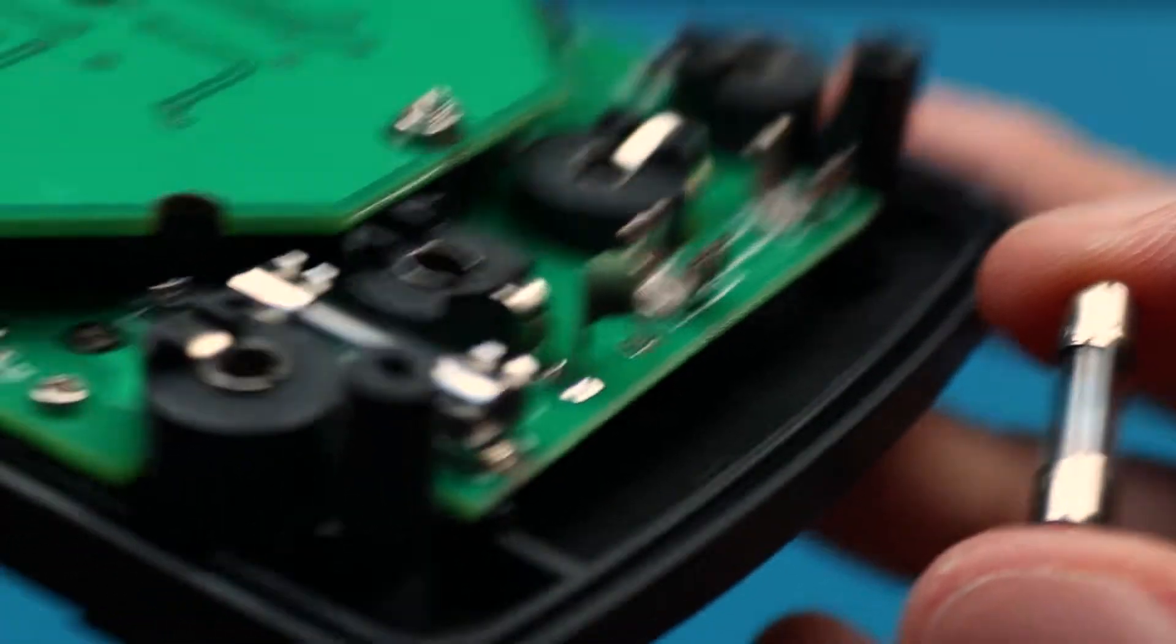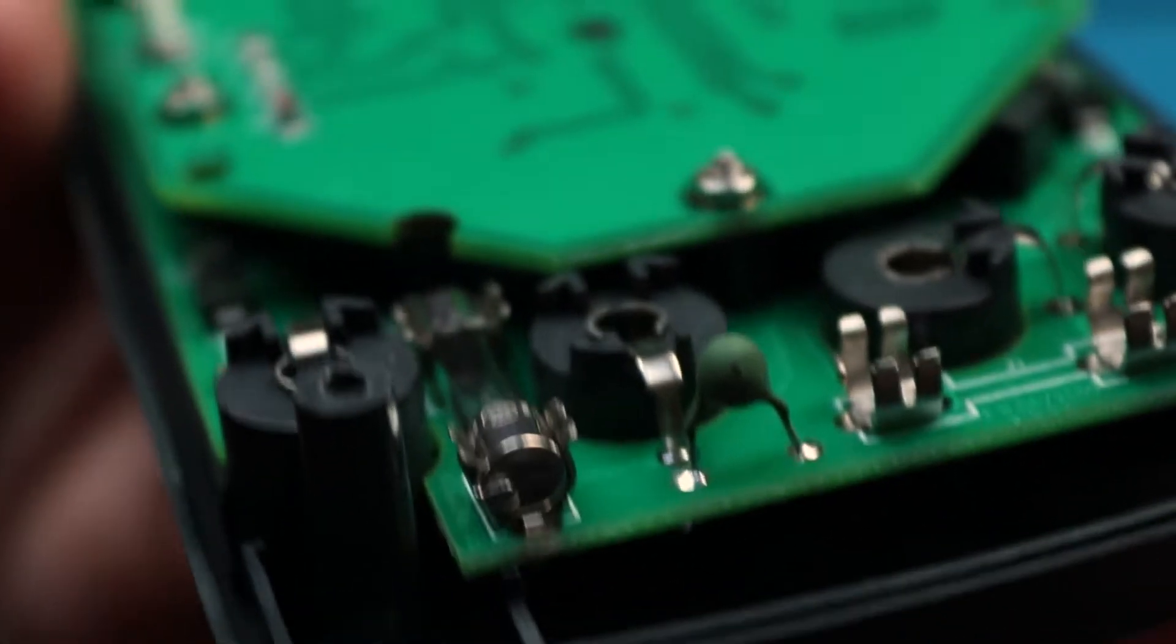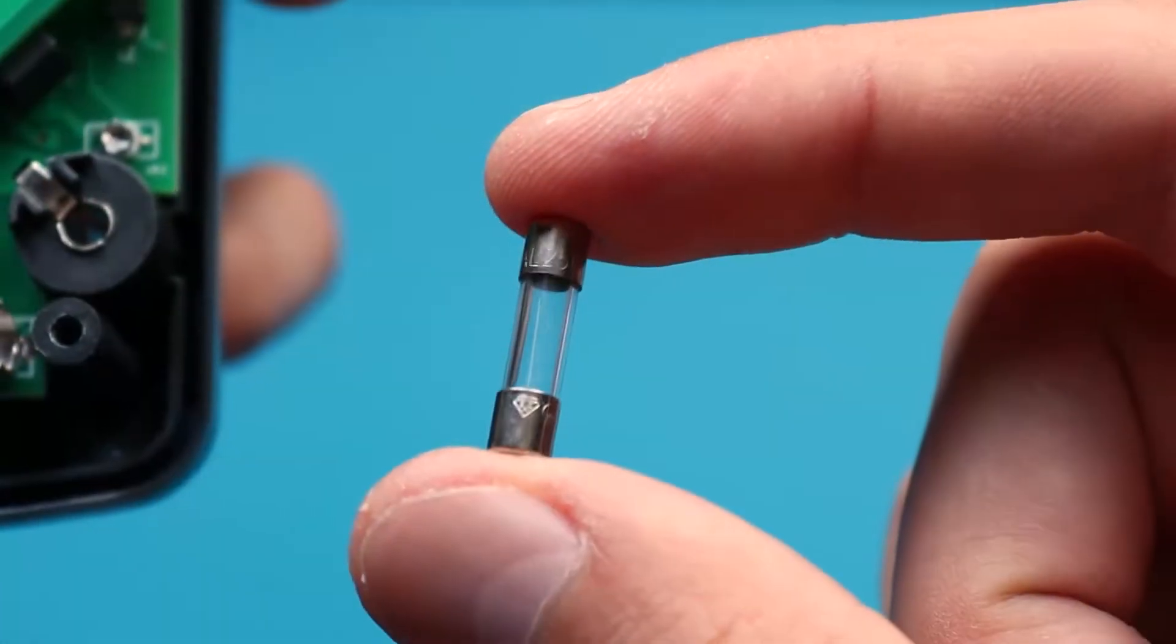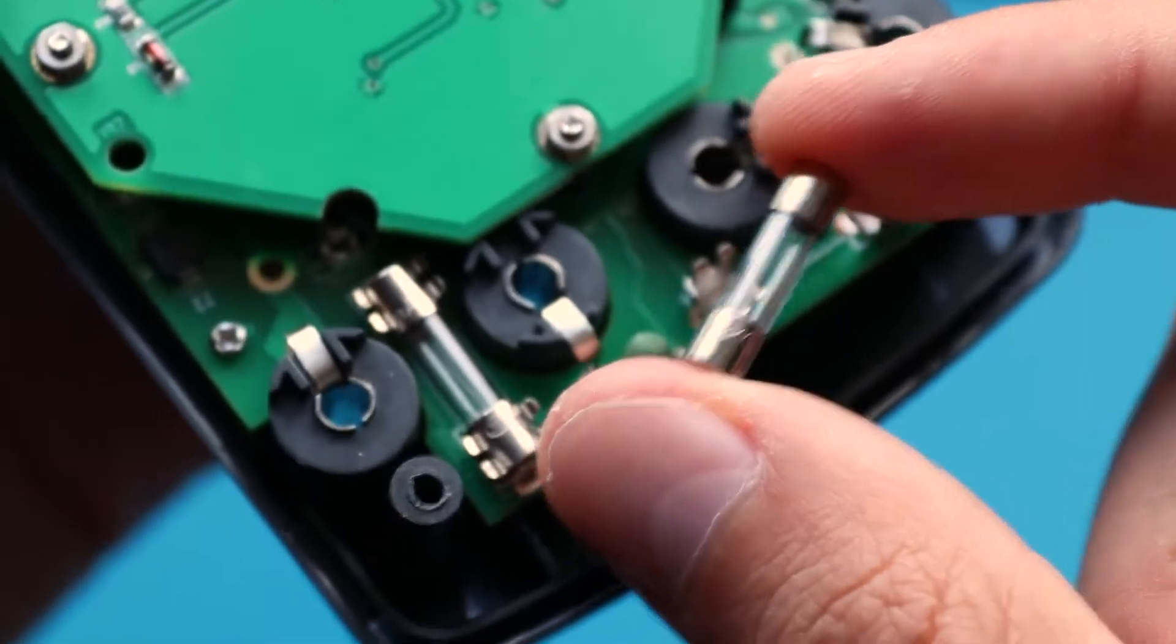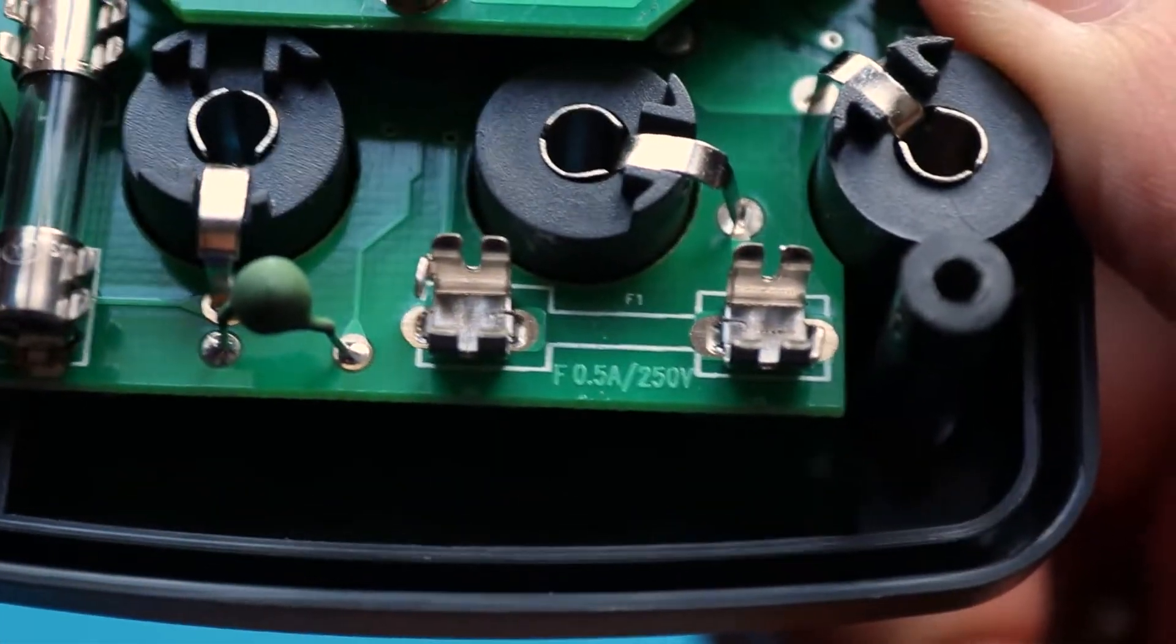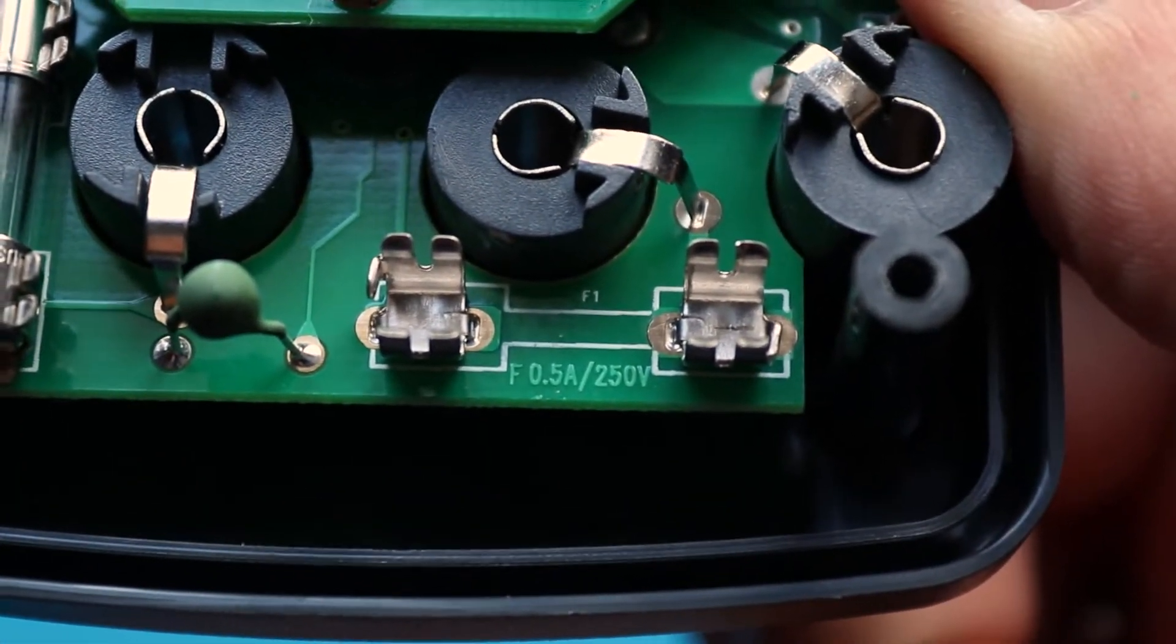And with the fuse, the situation is kind of the same. They're installed in special mounts and can be easily replaced. To know which exactly you need to have, look at the marking on the fuse if there is a marking, or like in my case, there is a silk screen on the PCB with the fuse parameters.